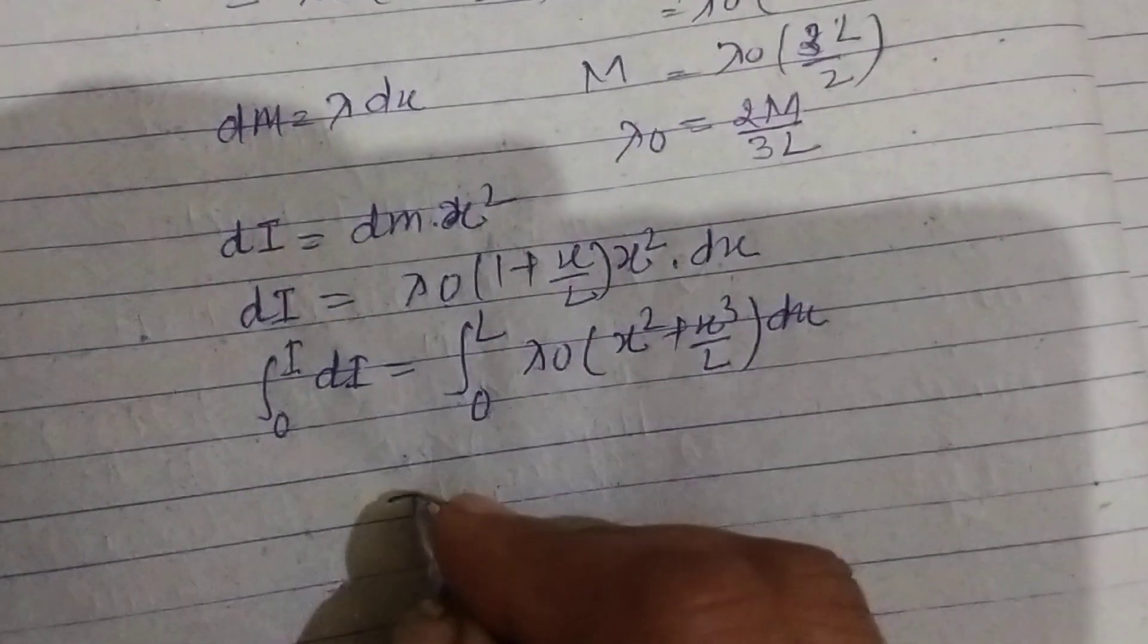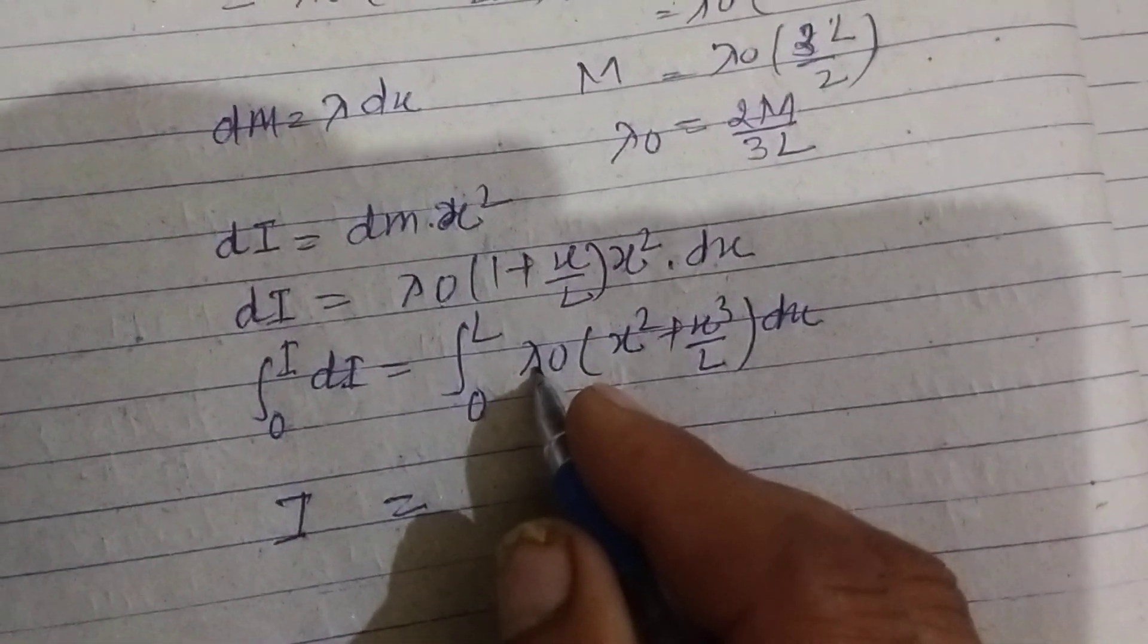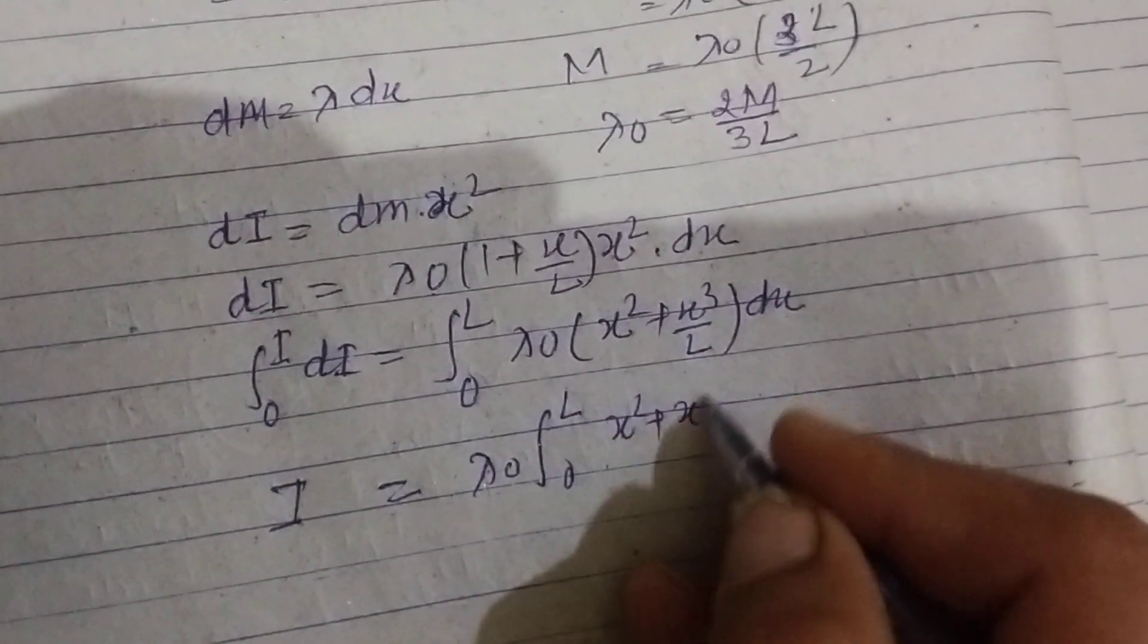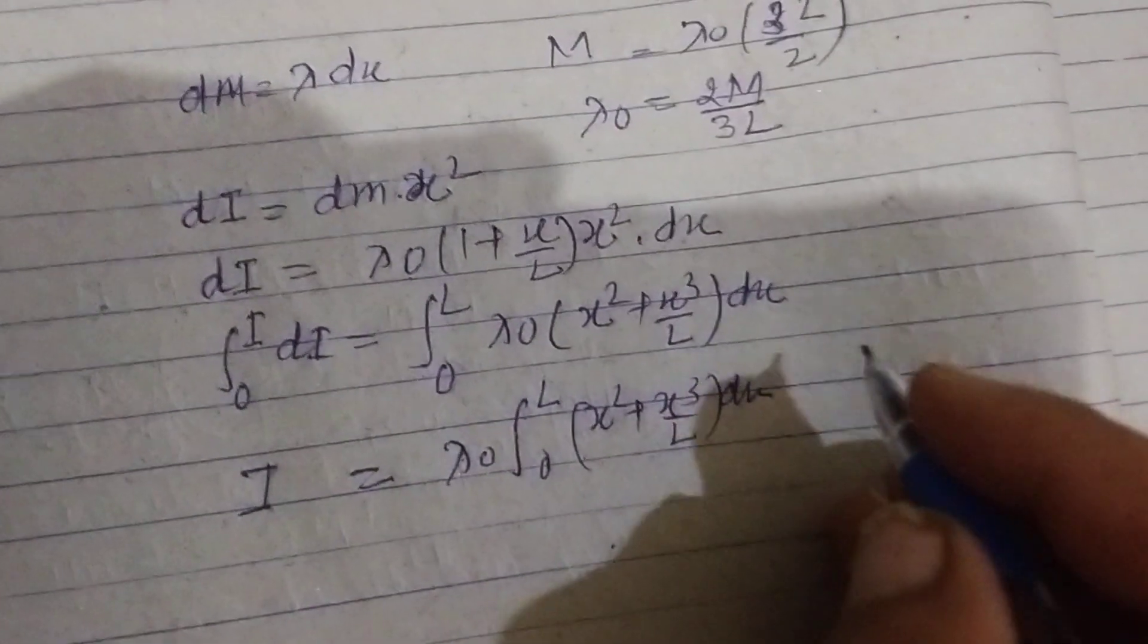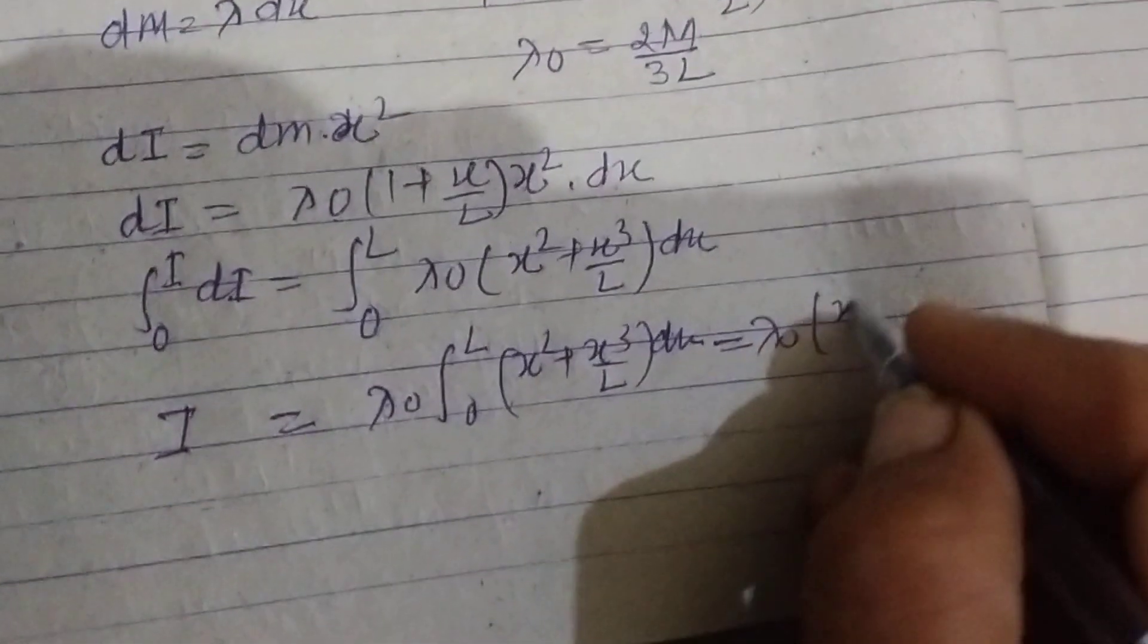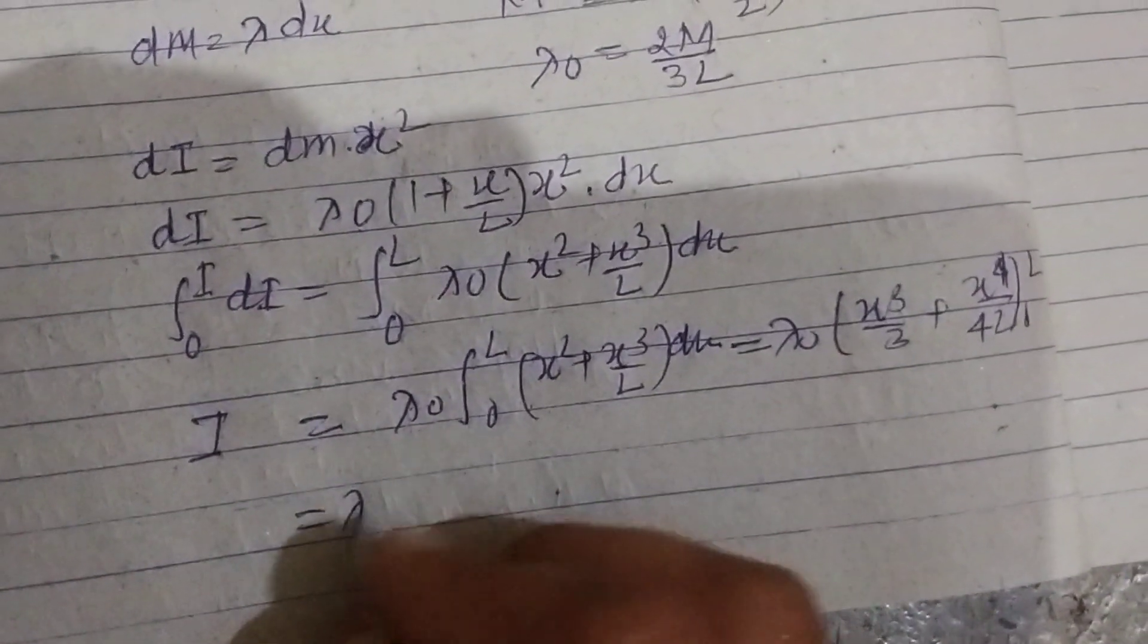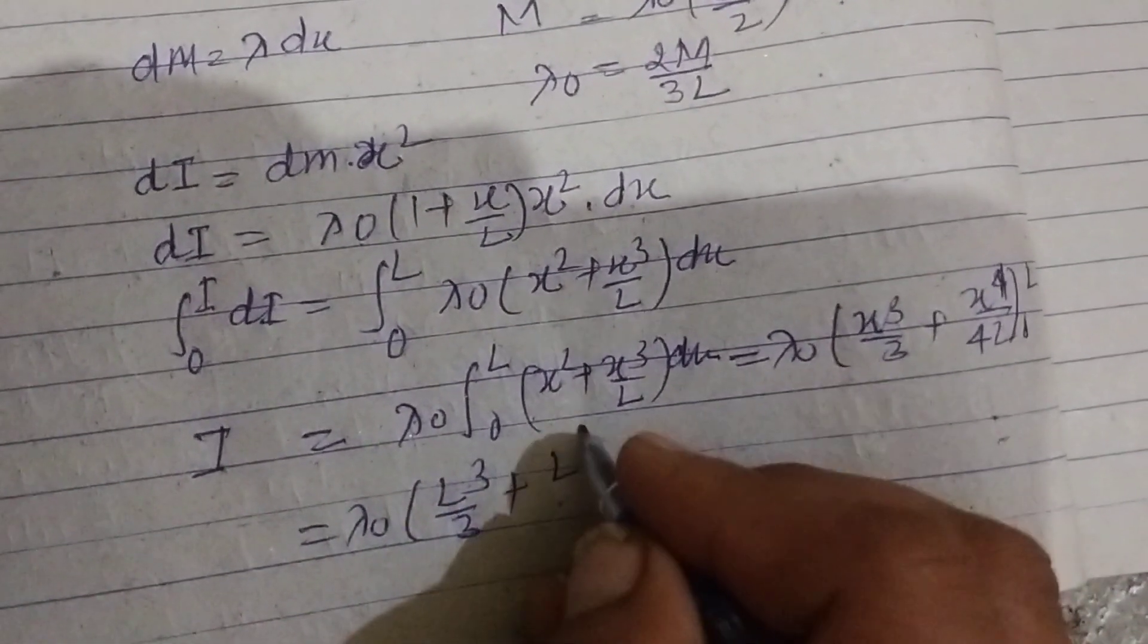We put value of lambda from here. Lambda naught is constant, 0 to L, x square, x cubed by L into dx. Now integrating this, this is x cubed by 3 and this is x to the power 4 by 4L, 0 to L.